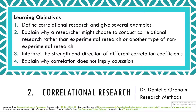Section 2: Correlational Research. The learning objectives for this section are: 1. Define correlational research and give several examples. 2. Explain why a researcher might choose to conduct correlational research rather than experimental research or another type of non-experimental research. 3. Interpret the strength and direction of different correlation coefficients. 4. Explain why correlation does not imply causation.